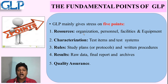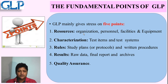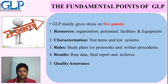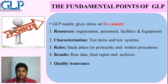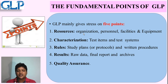The main fundamental points of GLP are based on five areas. First is resources: organization, personnel, facilities, and equipment. Second is characterization: test item and test systems. Third is rules: study plan or protocol — what to do, how to do it, what not to do — everything in written format. Fourth is results: raw data, final report — everything preserved properly to assure data quality. Fifth is quality assurance: an organization that supports, verifies, and certifies all this data.